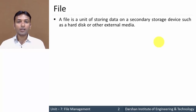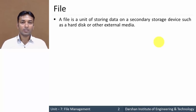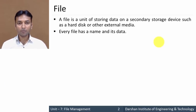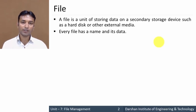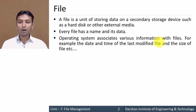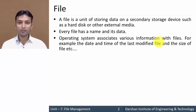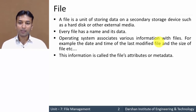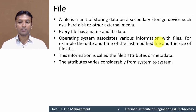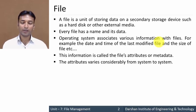In simple terms, a file is a container for storing data on a secondary storage device. Each file has a name as well as its data. The operating system associates various information with files, for example the date and time of last modification and file size. This information is known as file attributes or metadata, and these attributes vary from system to system.